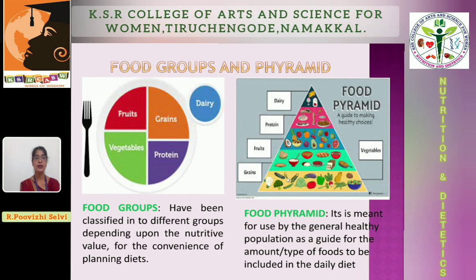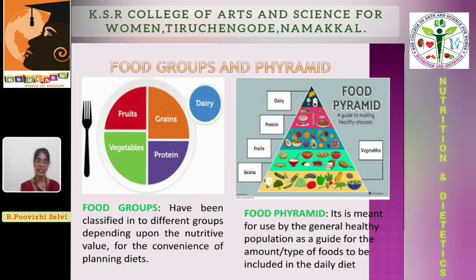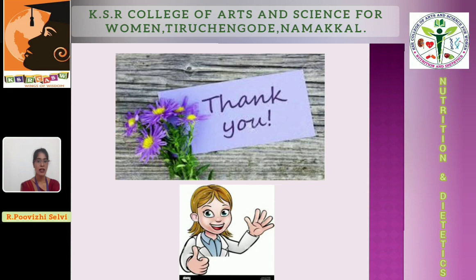The food pyramid is based on these food groups and is suggested by ICMR. It is meant for use by the general healthy population, indicating the amount and types of food to be included in the everyday diet. These food pyramids are divided into 4, 5, and 7 groups as suggested by ICMR according to health and societal needs. We will study each unit in this group separately. For any more details and queries, please reach out. Thank you.